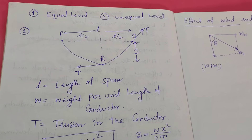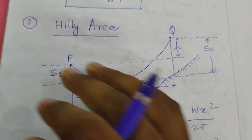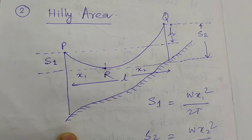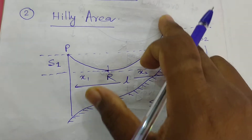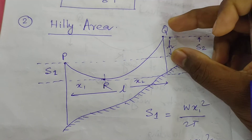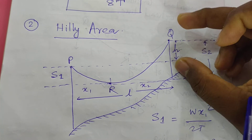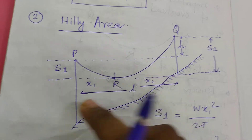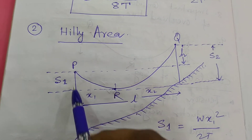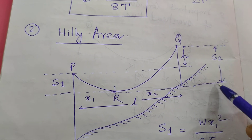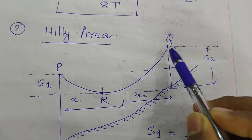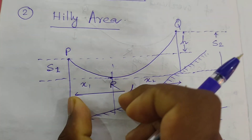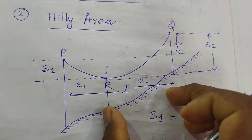For unequal distribution — unequal level — that is only applicable for the hilly area, as shown in this picture. This is the surface of the hill, and P and Q are the points where the transmission towers are located. The level is not equal. The difference between the support levels is H. H is the height difference between the equal and unequal support points, where R is the lowest point of the conductor. S1 is the SAG of the lower level tower, and S2 is the SAG of the upper level tower. X1 is the distance from the lowest point, and X2 is the distance from the highest point. L is the total span length.